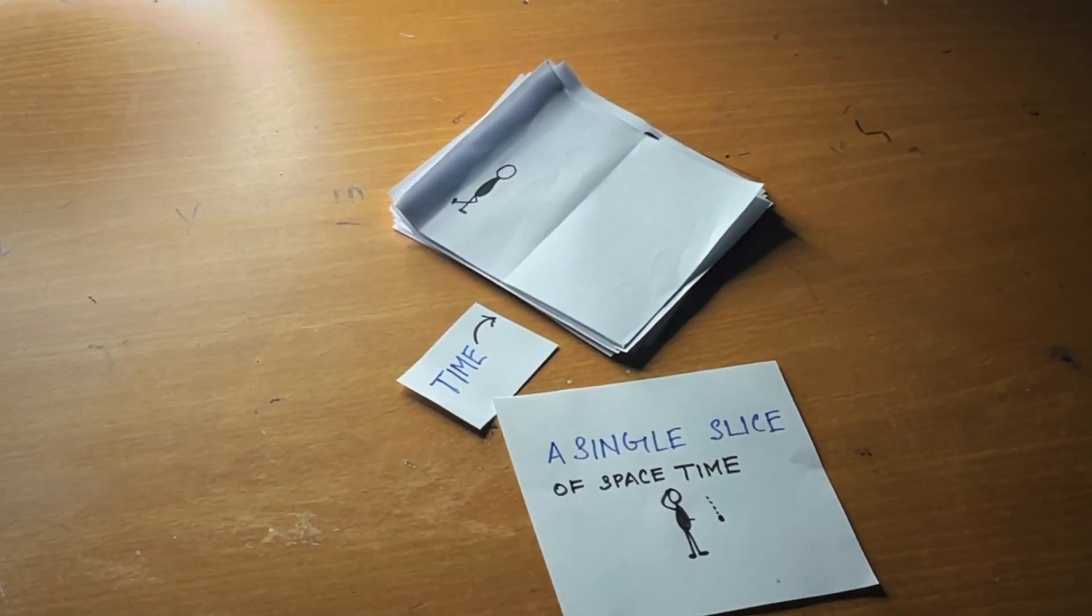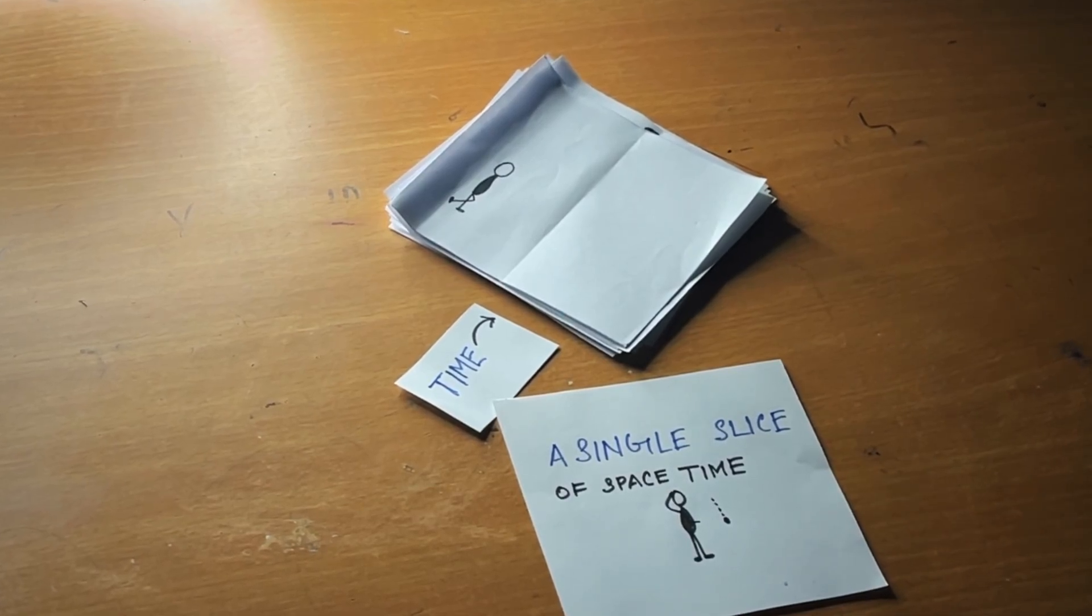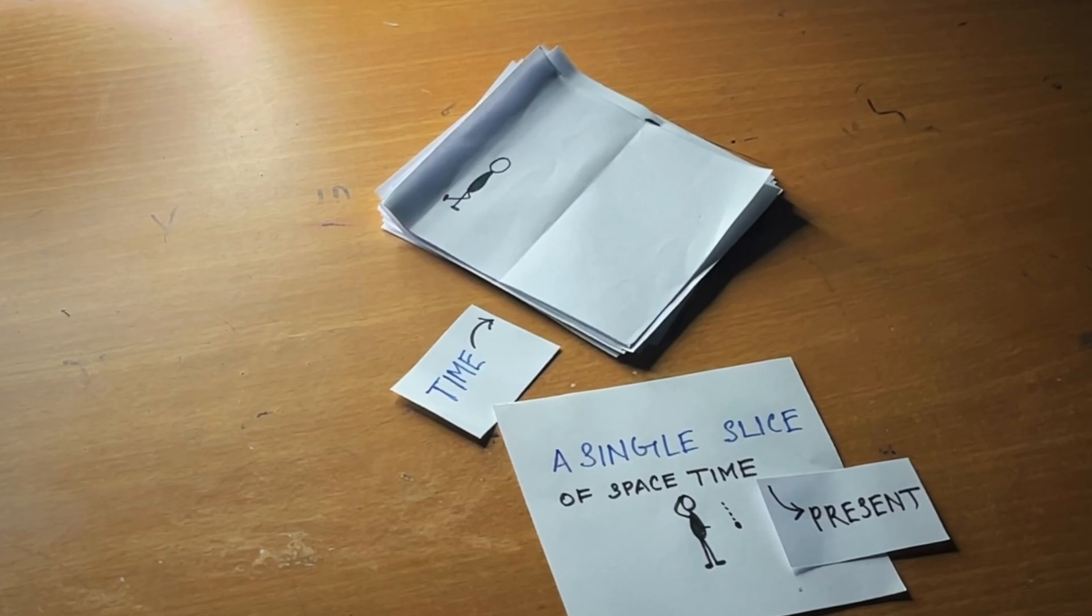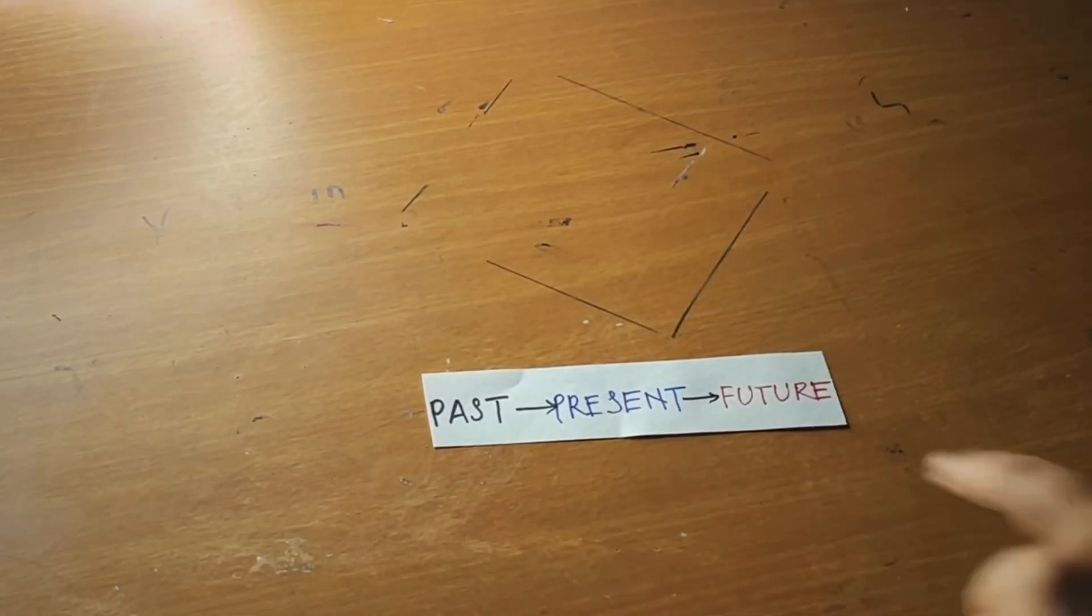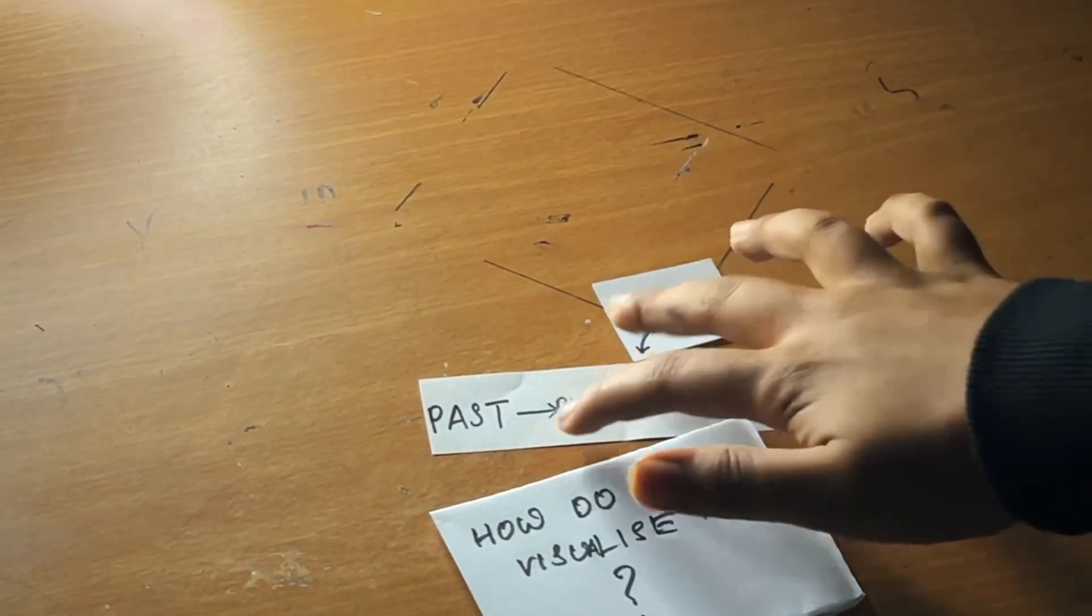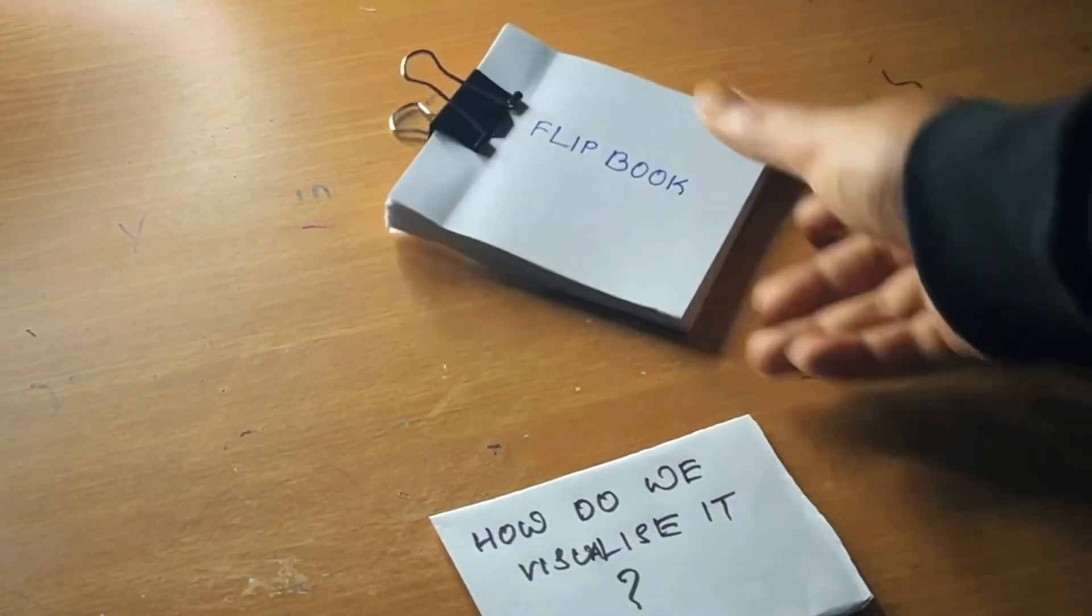Every moment we experience is just a single slice of a larger spacetime 4D reality. That means we are experiencing a single page as a present moment in a whole flip book of events. We perceive time as a sequence, but what if our past, present and future all exist together as part of a fixed 4D structure like this flip book?